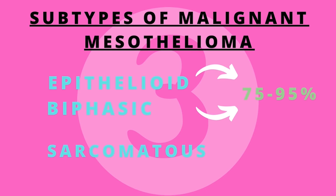Most mesothelioma express high levels of cytokeratin-5 regardless of subtype. Epithelioid mesothelioma is characterized by high levels of calretinin, whereas sarcomatous mesothelioma does not express high levels of calretinin.